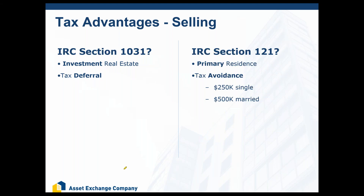Where you do need to use an accommodator is if you are doing an investment property sale — Section 1031 comes into play. You have the opportunity to defer taxes on the sale of that property, provided you go out and reinvest into another property. Two important tax laws: Section 1031 is deferral for your investment property, and Section 121 is tax avoidance for your home. That covers almost every type of real estate you're going to sell.